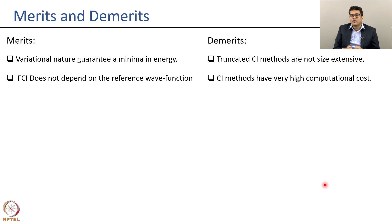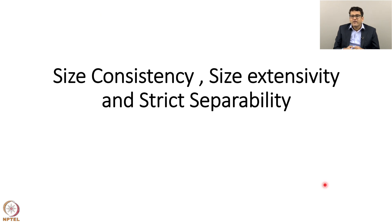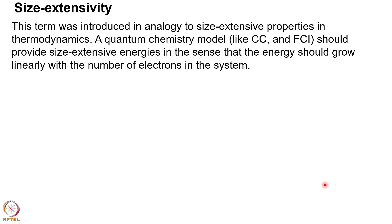Now let us look at what size extensivity means. There are three terms we will discuss: size consistency, size extensivity, and strict separability. These three terms are often used interchangeably when discussing wave function theories, but they are three separate concepts with very different meanings. Size extensivity, introduced in analogy to size-extensive properties in thermodynamics, means that a quantum chemical model should provide size-extensive energy — the energy should grow linearly with the number of electrons in the system. This is a mathematical property related to the scaling behavior of energy with respect to the number of electrons.